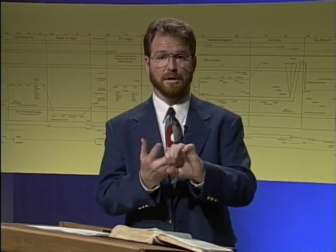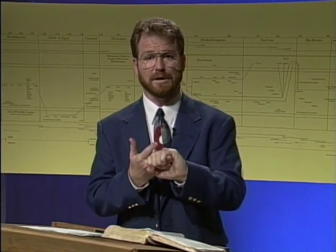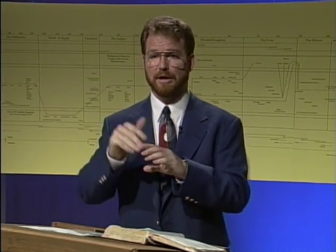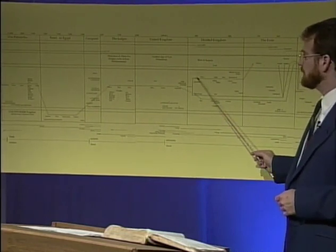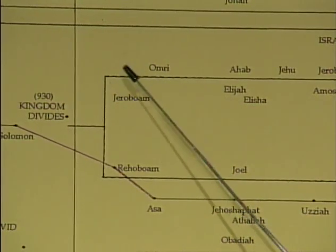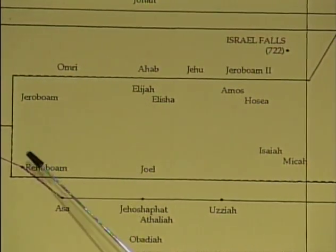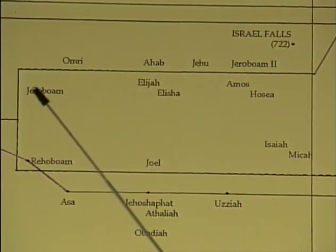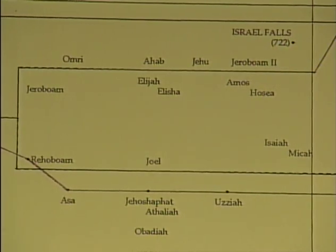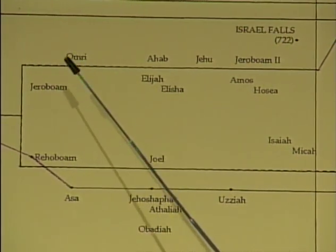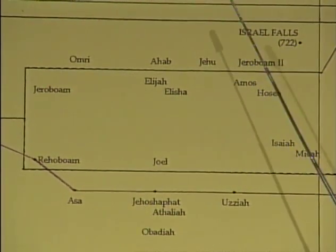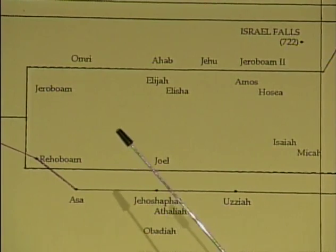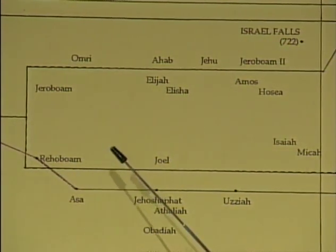The kingdom divides in 930 BC into two nations. We had Saul, David, and Solomon — one nation, Israel. But in 930 BC at 1 Kings chapter 12, it divides into a northern nation and a southern nation. The northern fork is Israel; the southern fork is Judah. Rehoboam remains king of Judah in the south, with the two tribes of Judah and Benjamin. In the north, the ten remaining tribes are led by Jeroboam. This is the line that Jesus comes from — the line of Judah in the south.